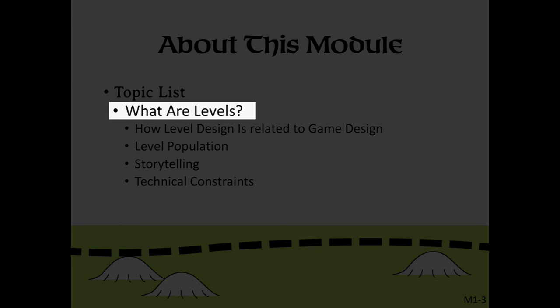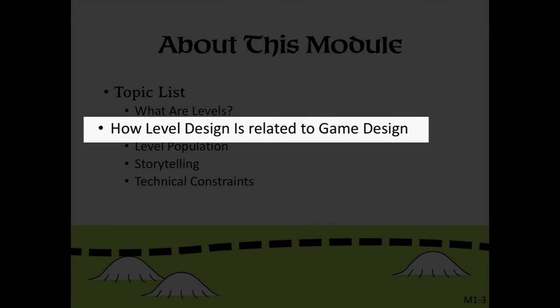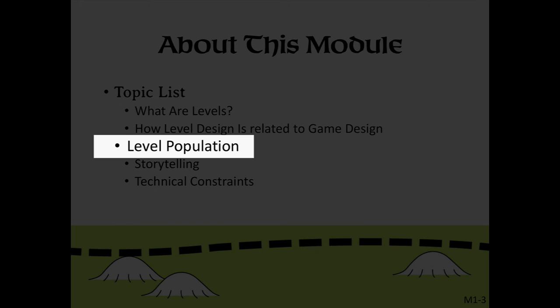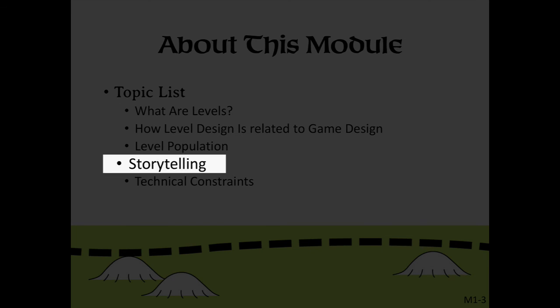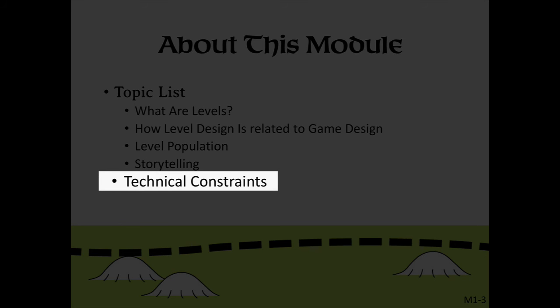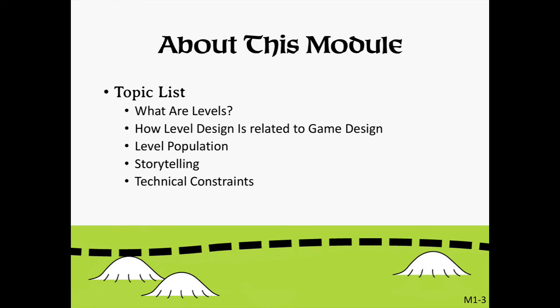We'll touch on the following topics: What are levels? How level design is related to game design? Level population — what is it and why does it matter? Storytelling and technical constraints. Don't worry about understanding these concepts right away. We'll talk about each of the topics in great detail in later modules. For now, I just want you to get used to thinking like a professional designer and get acquainted with some of the terms and concepts that we'll be using in this class.